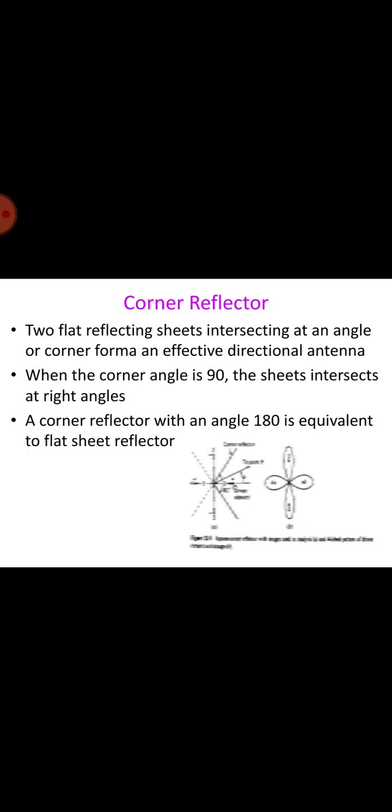The corner reflector: two flat reflecting sheets intersecting at an angle or corner forms the effective directional antennas. When the corner angle is 90 degrees, the sheets intersect at right angles. A corner reflector with an angle of 180 degrees is equivalent to a flat sheet reflector.